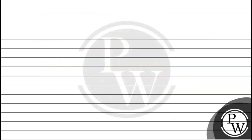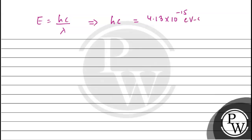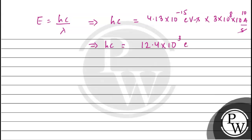Now we have to calculate energy, so energy is equal to hc upon lambda. We have h in electron volt second, c is 3 into 10 to the power 8 meter per second, which we convert to angstrom per second as 3 into 10 to the power 18 angstrom per second. So hc equals 12.4 into 10 to the power 3 electron volt angstrom.